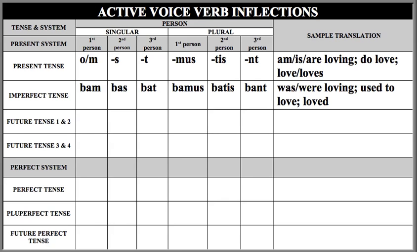As soon as you look at the future tense on the verb chart, you should notice that it's different automatically because it appears as though there are two future tenses. There isn't really a second future tense, but there are two different sets of future tense endings. The title of the future tense — whether we're looking at future tense 1 and 2 or future tense 3 and 4 — tells us which conjugation of verb each of these endings will be added to. The verbs are divided in the future tense into two groups: the first group has first and second conjugation, and the second group has third and fourth conjugation, which also includes third IO.